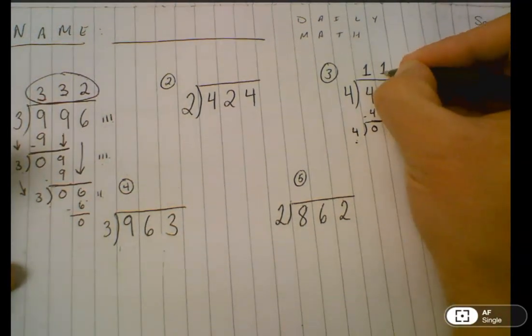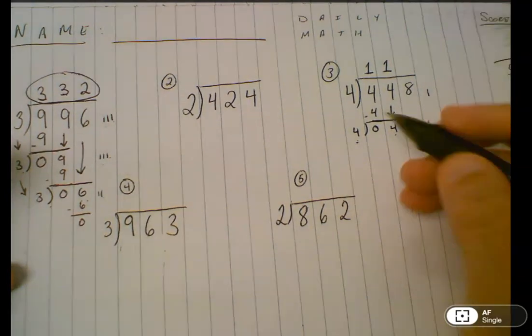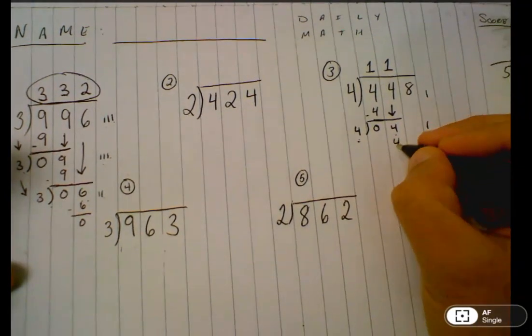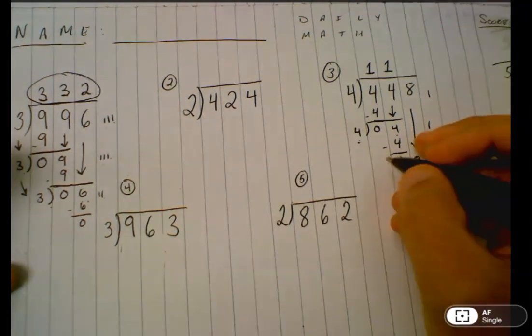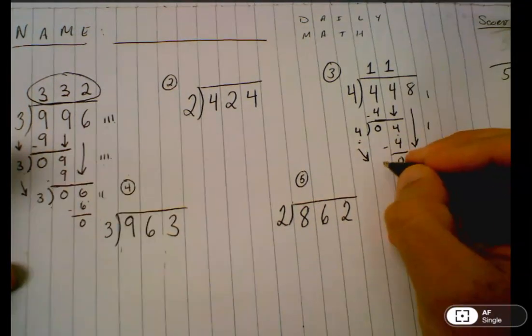When you skip count by four, you get close to four. That's one. Four times one is four. Subtract, bring down the final piece of the dividend, bring down the divisor.